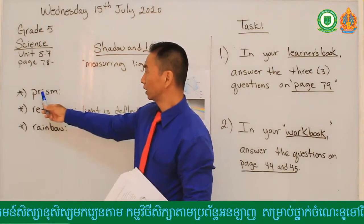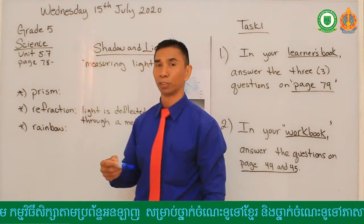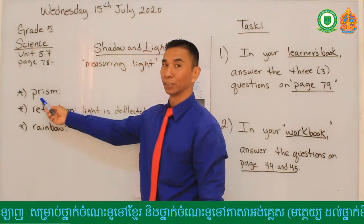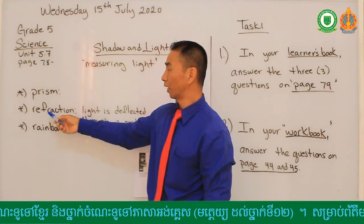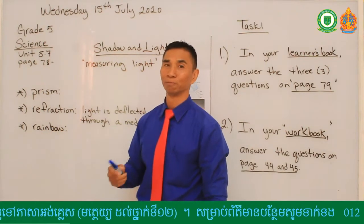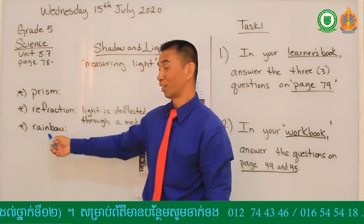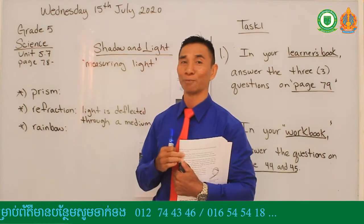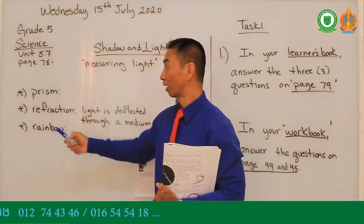I have some words here that I wrote on the board that will help you through your reading and understanding for today's lesson. The first word is prism. The second word is refraction. And the last word is rainbow. You all know what a rainbow is, right? Please post a picture of a rainbow on our telegram so I will know that you understand what a rainbow is.